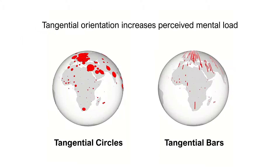Finally, the study results suggest that tangential orientations of the visual primitives increase readers' perceived mental load. This could be attributed to the fact that it is very difficult to rotate the globe such that the values to be compared are not distorted.